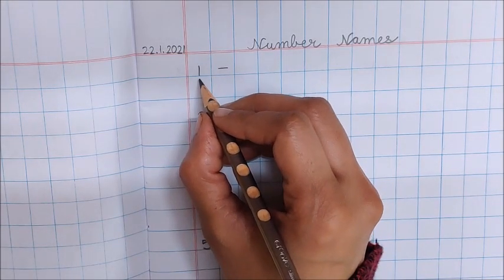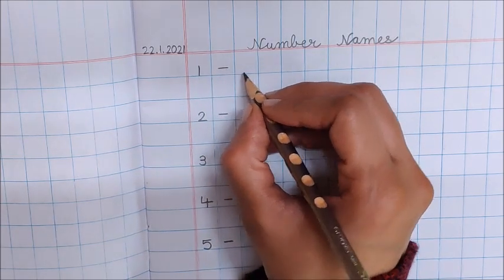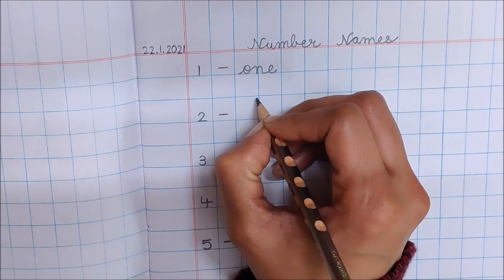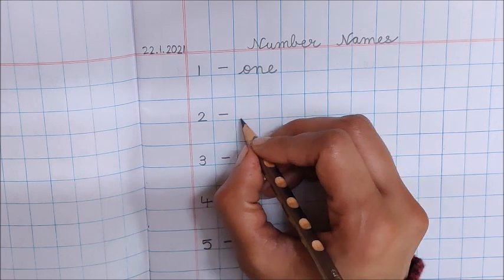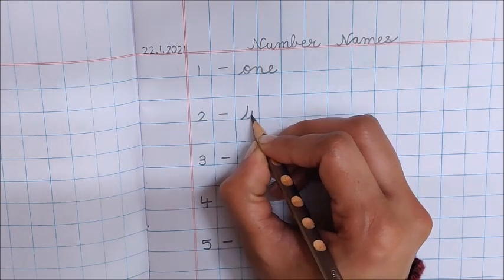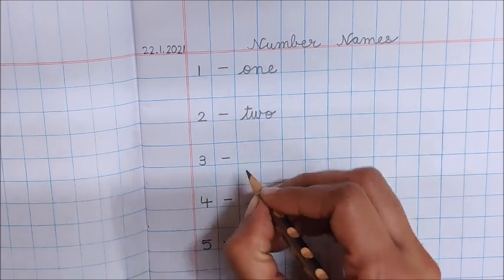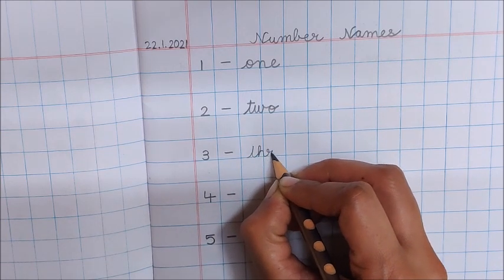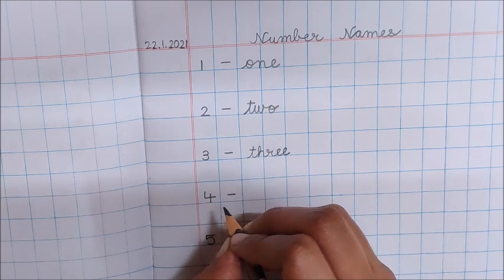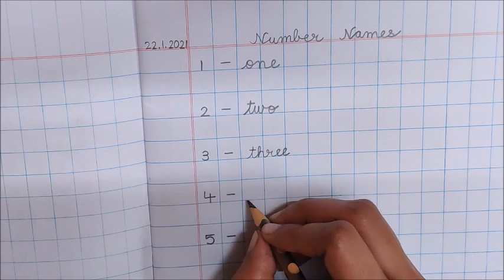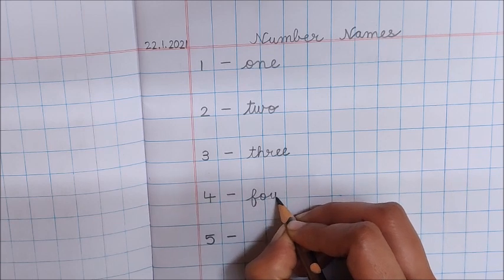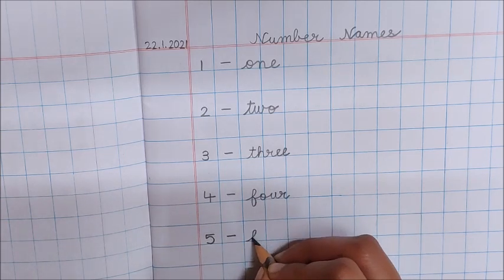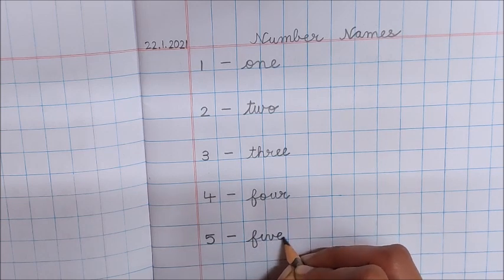Now go to the first number. What is this number? One. So after this dash we will write the spelling of number one: O-N-E, 1. What is the next number? Two. Write the spelling of two after the dash: T-W-O, 2. What is this number? Three. Write the spelling: T-H-R-E-E, 3. What is the next number? Four. Write the spelling of four after the dash: F-O-U-R, 4. What is this number? Five. Write the spelling of five: F-I-V-E, 5.